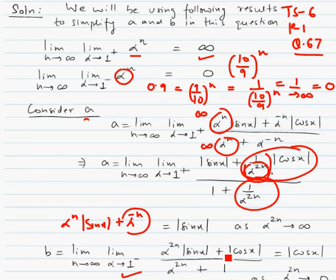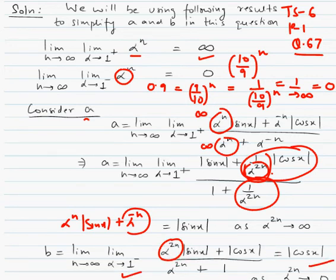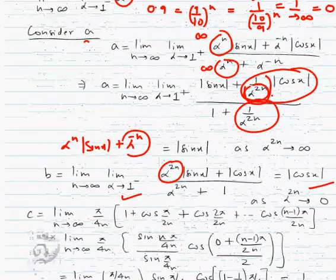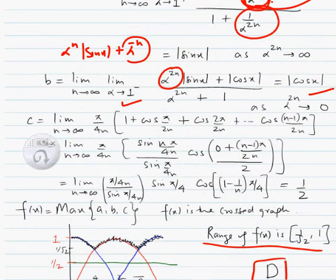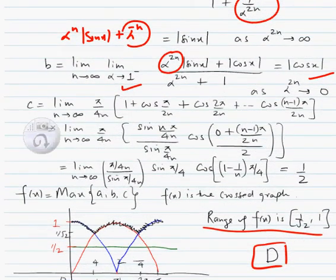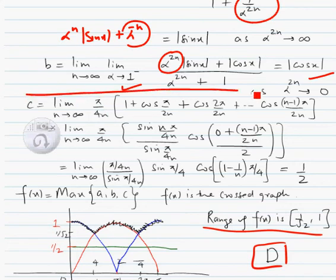This expression approaches 0 because alpha is less than 1. So the limiting value is cos x. We are able to simplify: a equals mod sin x, b equals mod cos x. Similarly, we will simplify c.